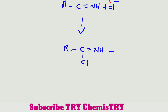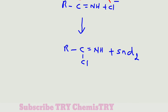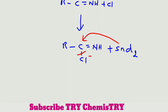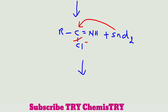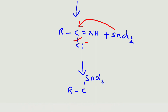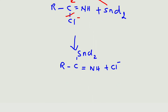In the next step, stannous chloride (tin chloride) donates an electron to this carbon. At the same time, the carbon-chlorine bond breaks and the chlorine becomes Cl⁻. We get R–C(SnCl₂)=NH plus Cl⁻, with a positive charge on the tin.